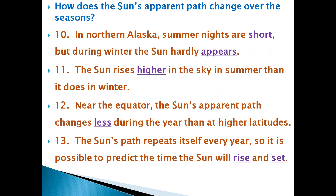How does the sun's apparent path change over the seasons? Number 10: In northern Alaska, summer nights are short, but during winter the sun hardly appears. The two answers are: the first blank is 'short' and the second is 'appears'.